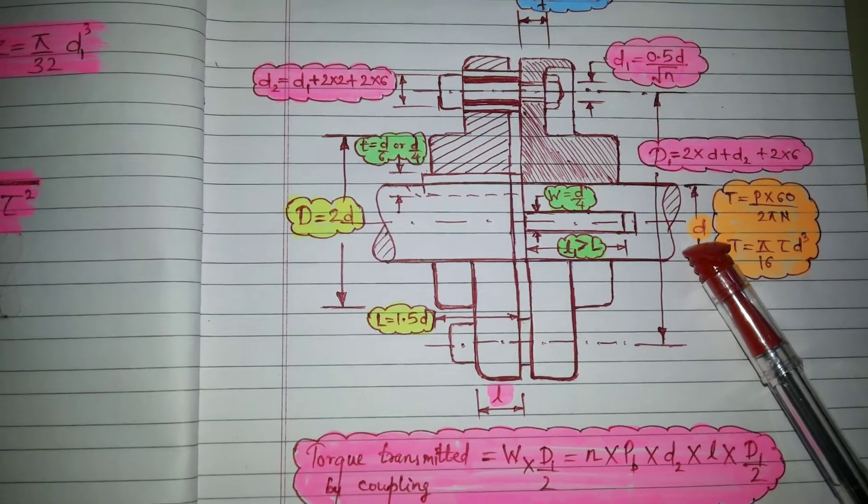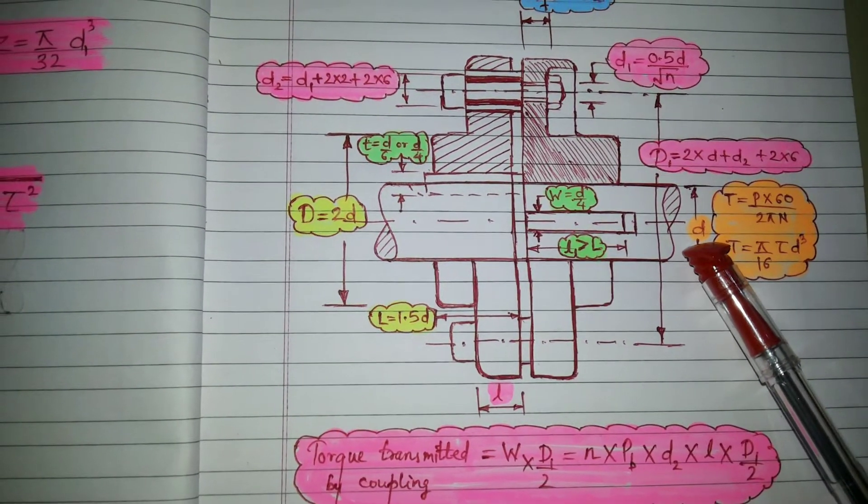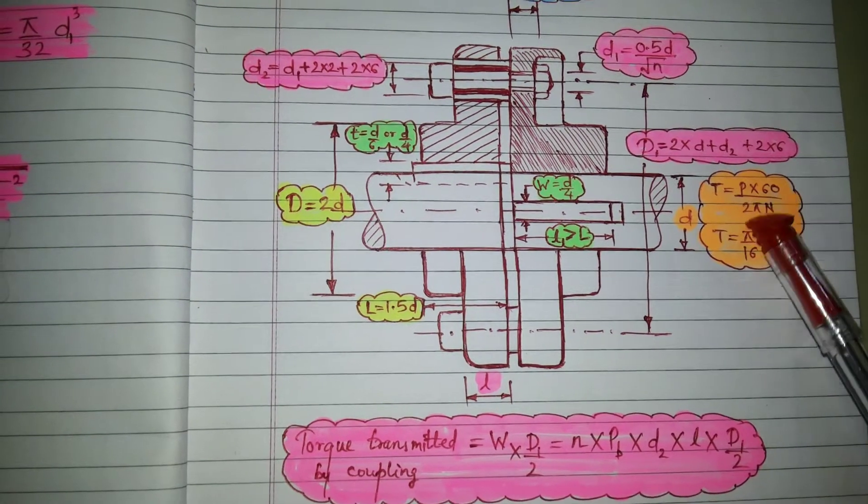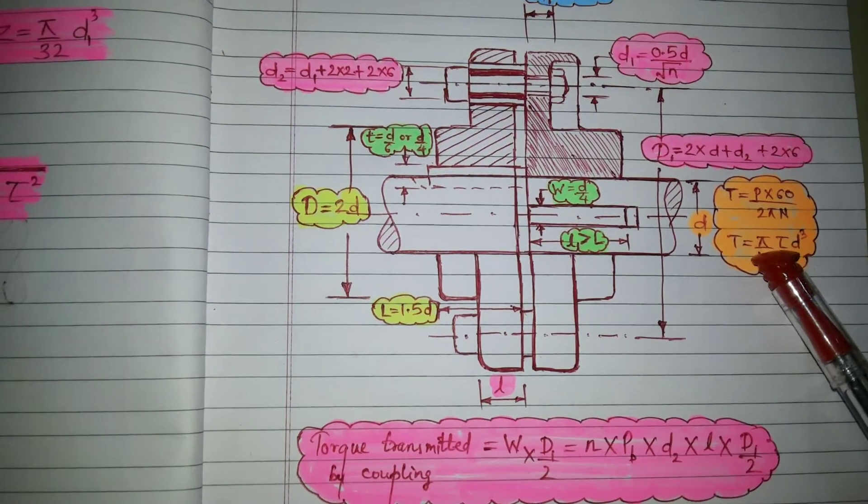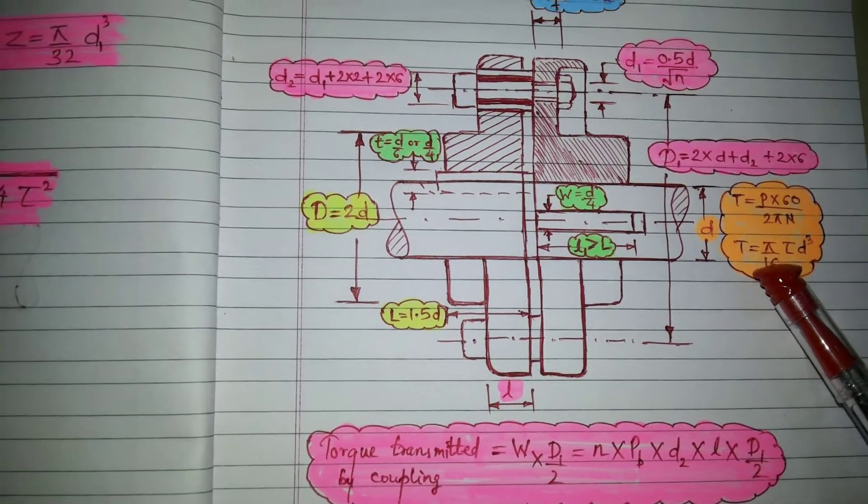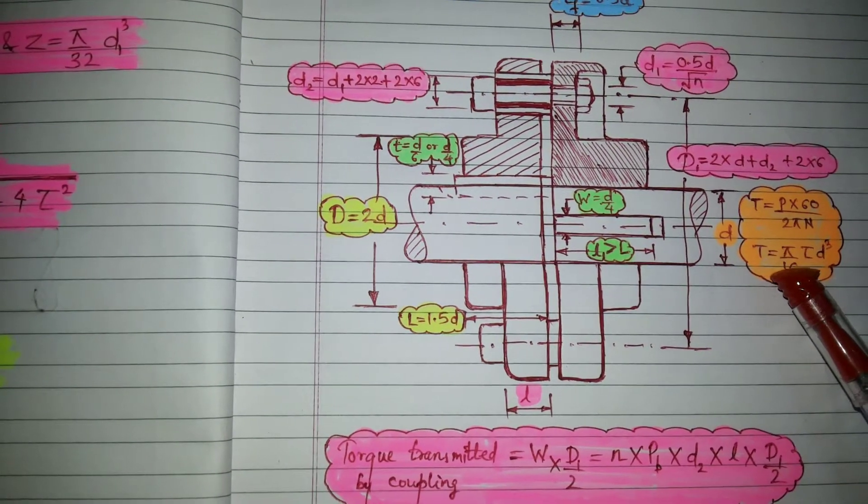So as you can see, here, the step number one, we need to find D. For that, we have two formulas. From there, we can find D. This is step number one.